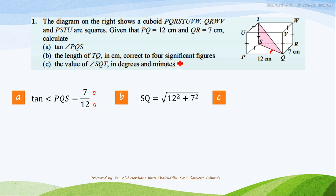Next, part B, the length of TQ correct to 4 significant figures. So before we calculate the length of TQ, first need to calculate the length of SQ by using Pythagoras theorem. So SQ equals to 13.894. Then only we can calculate the length of TQ. So TQ equals square root of SQ squared plus TS squared. So the length of TQ equals to 15.56 cm.